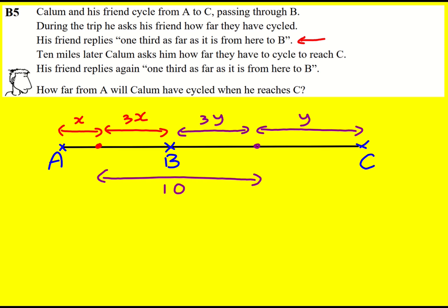So again I'm avoiding fractions and that is my whole problem basically and I can just now use that piece of information 10. So it must be that 3x plus 3y is equal to 10 and what we're actually trying to work out is how far from A will Callum have cycled when he reaches C. We're actually trying to work out 4x plus 4y.